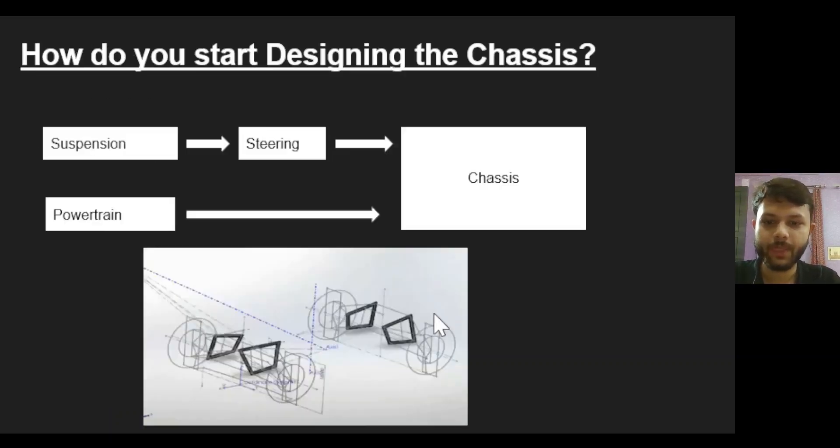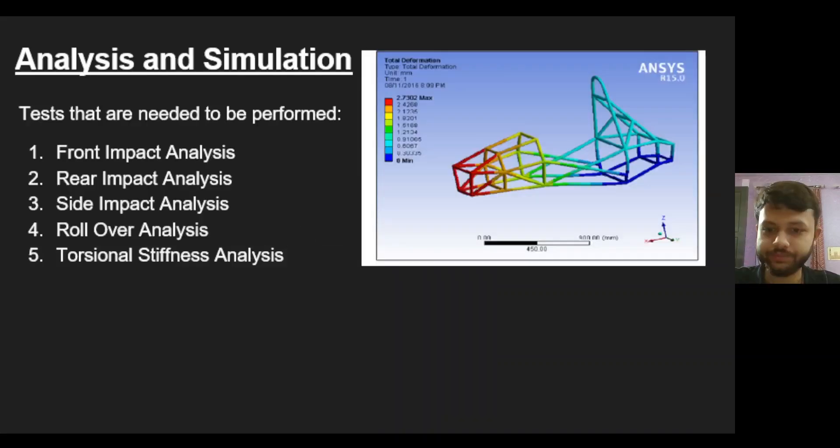Having discussed all this, now the question arises: from where should you start the designing process? Chassis design usually starts at the end. Other subdivisions need to first design their parts and then according to them the chassis is designed. The suspension team gives you four hard points, and from these four points the design process begins.